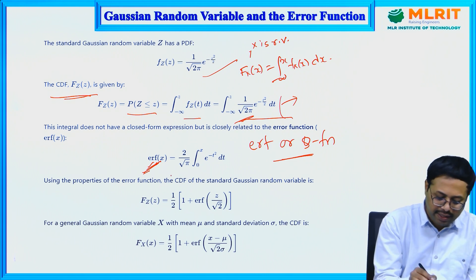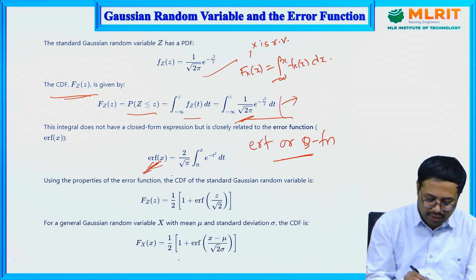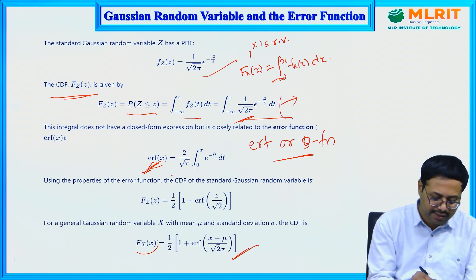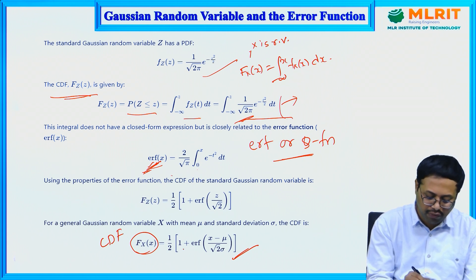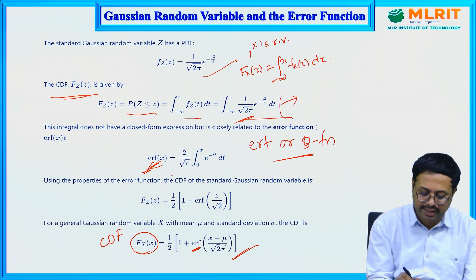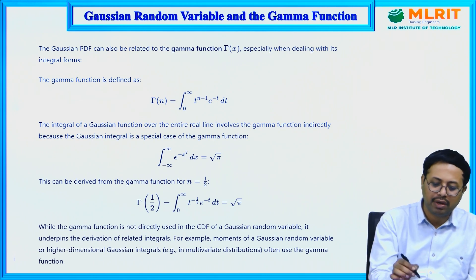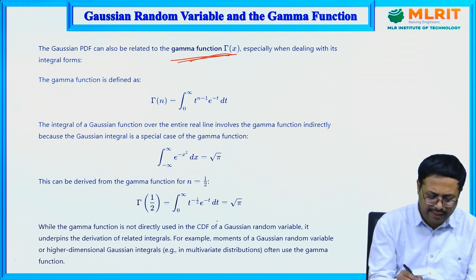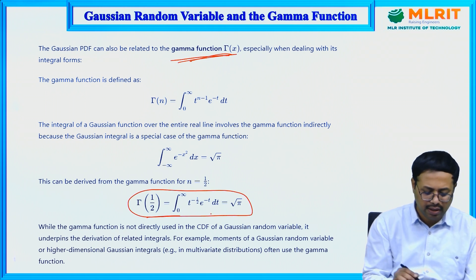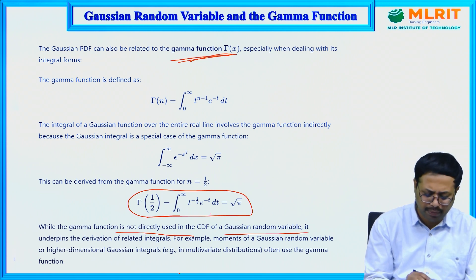The complementary error function is defined, and the error function equals (2/√π) times the integral from 0 to x of e^(−t²) dt. The CDF of a Gaussian random variable can then be written as F(x) = (1/2)[1 + erf((x − μ) / √2)]. The gamma function cannot be directly used here; instead, the Q function or complementary error function is used for simplification.